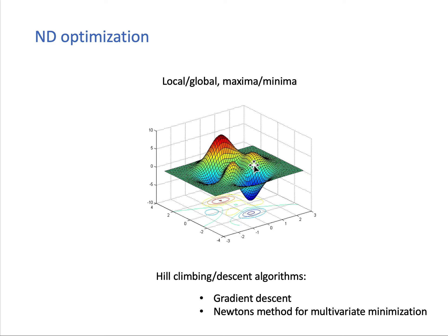This is a complicated function that can have local maxima and a global maximum. A local maximum is a point where, in the surrounding x-y neighborhood, no other value of the function is higher — but farther out there may be an even higher value. The global maximum is the highest point overall. Likewise, you can talk about a global minimum and a local minimum. This is not a quadratic function — in a general engineering problem you may not know what kind of function it is, but you can still evaluate it.